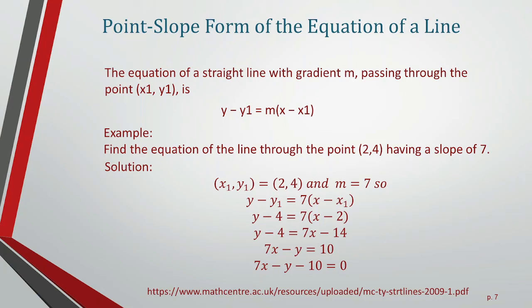Point-slope form of the equation of a line: if a straight line passes through a point with gradient m, the equation will be y - y₁ = m(x - x₁).